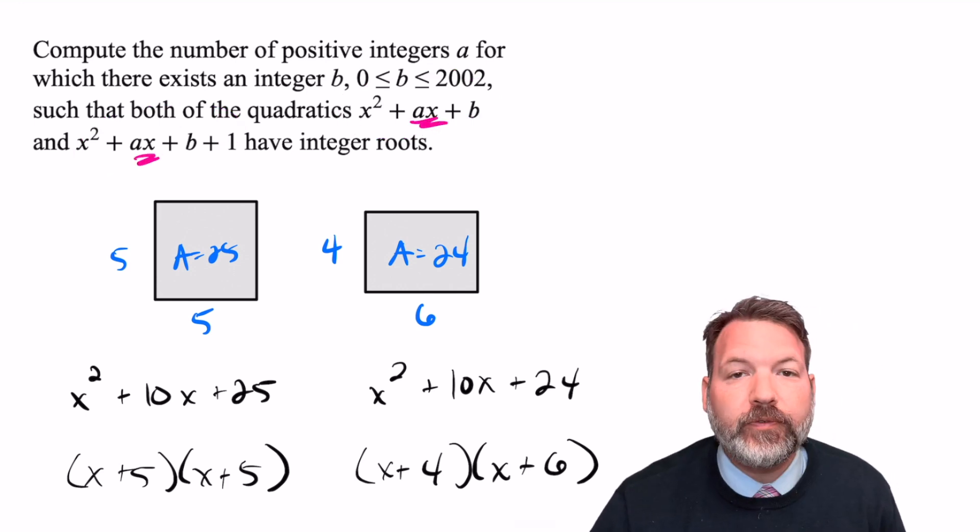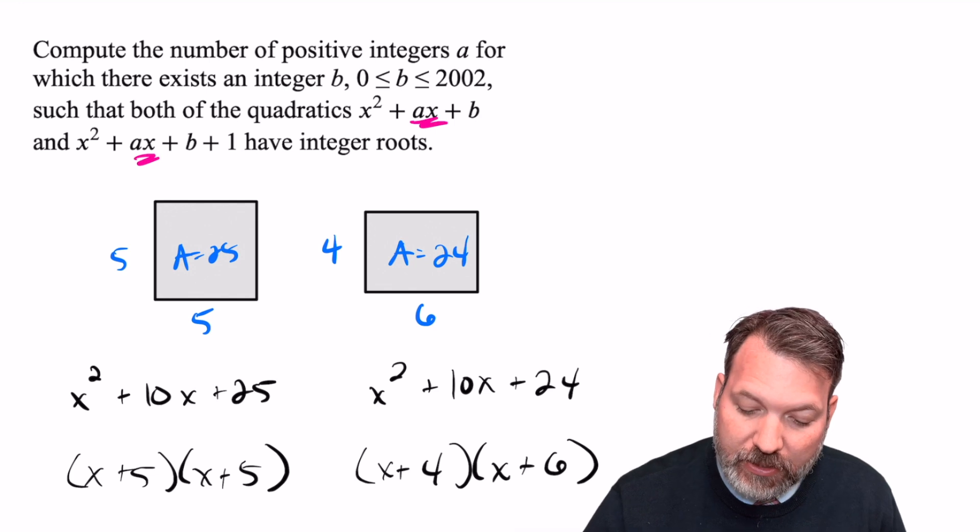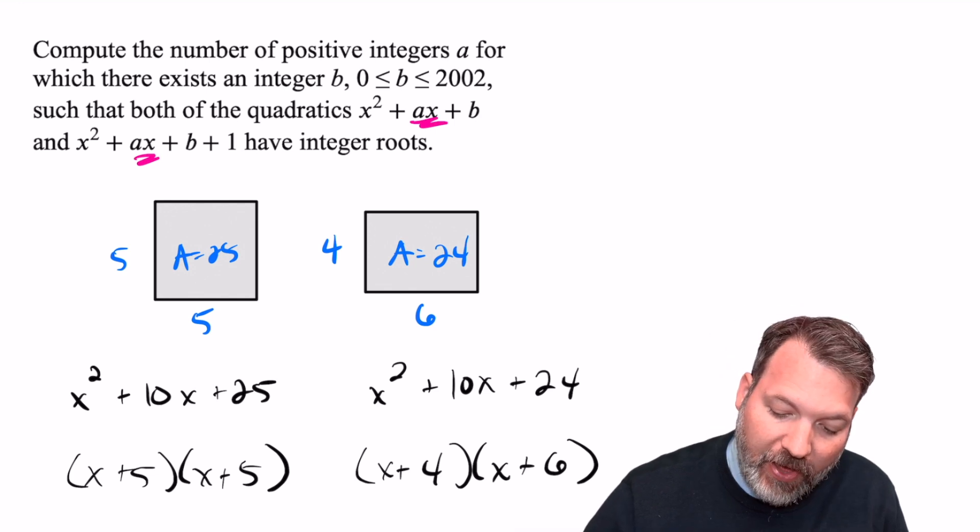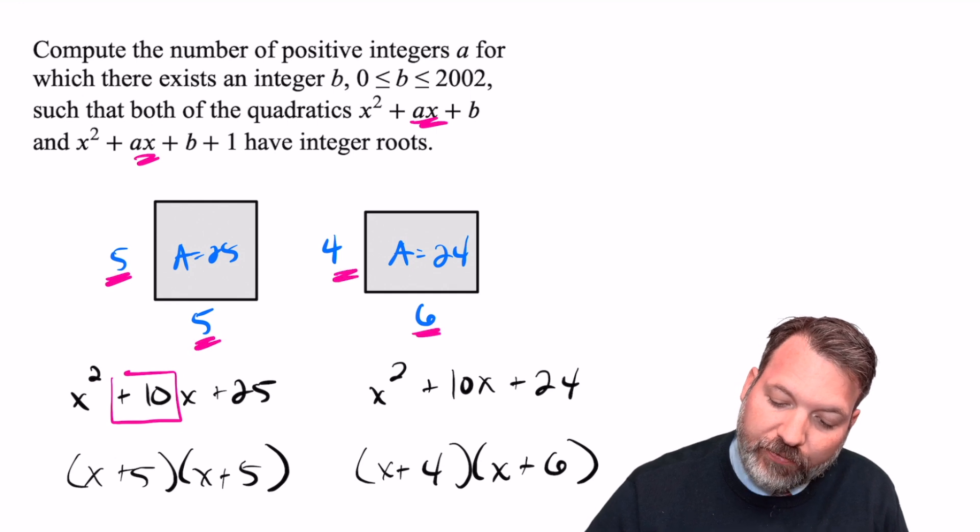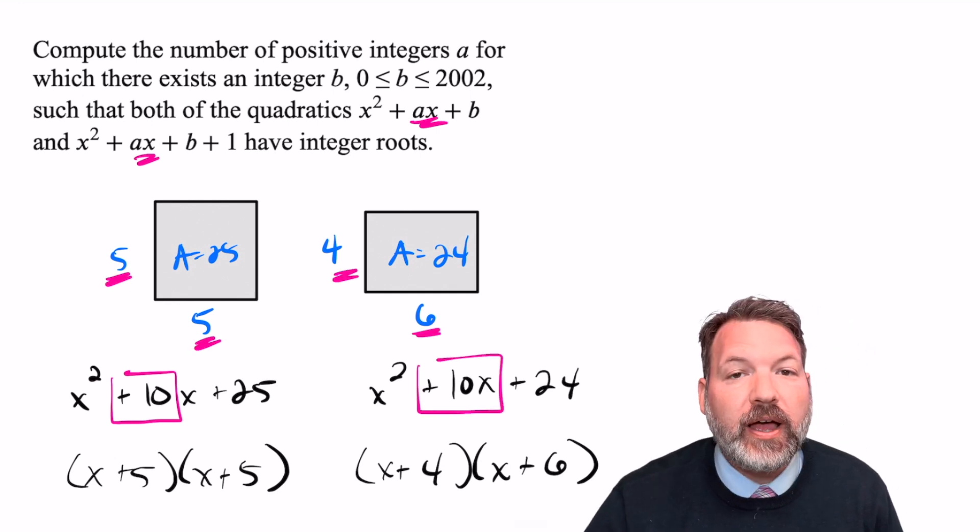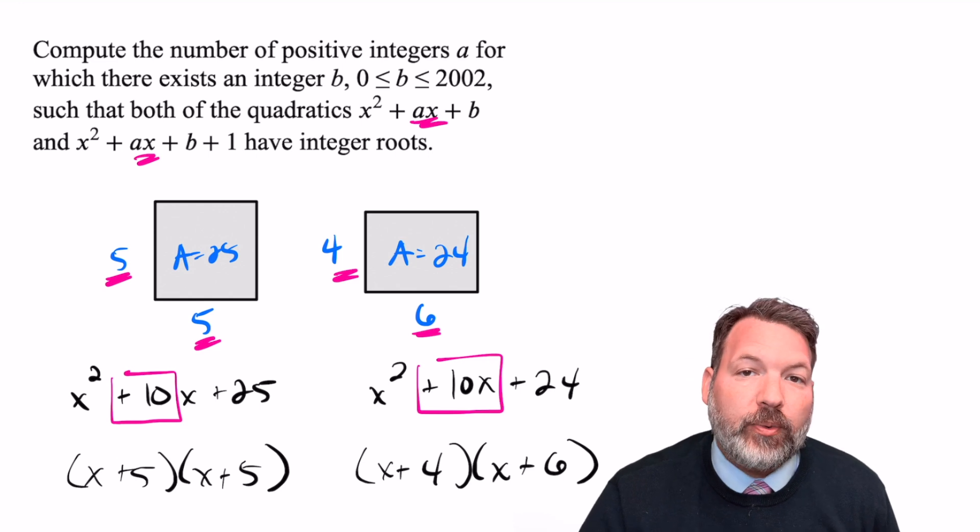Our middle term, the linear term for each one of these quadratics is the same. In both cases, that positive 10 is coming from the sum of the two different dimensions, whether it's five plus five or four plus six, either way we get 10.